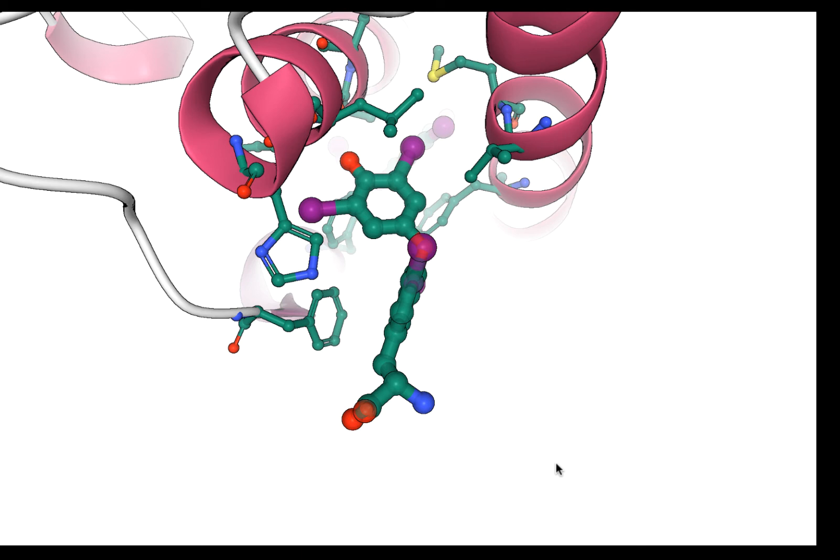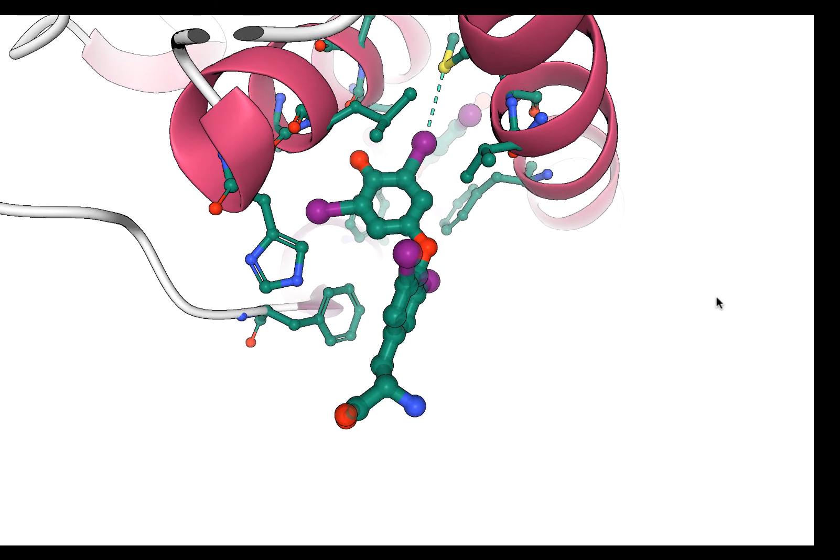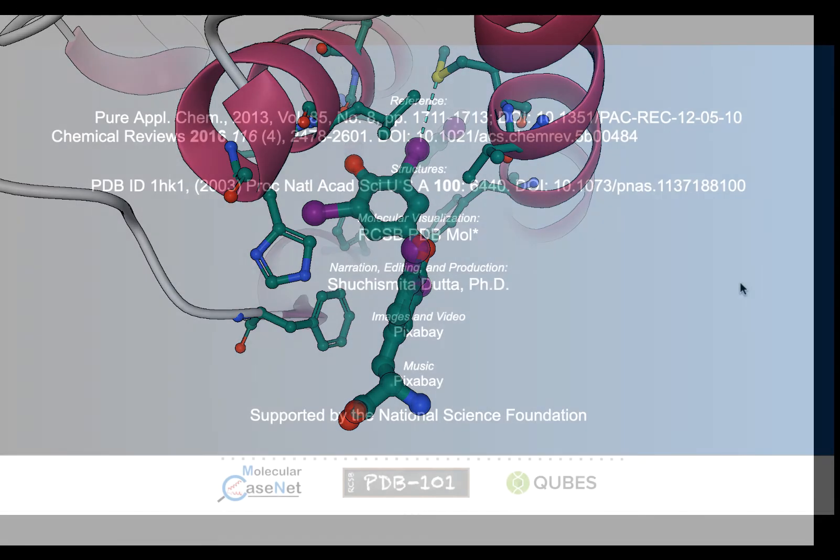Although methionine is generally considered a non-polar amino acid, the sulfur atom in the side chain is large and has many electrons. By bringing the partially positive region of the iodine close to the sulfur causes attractive interactions forming a halogen bond.